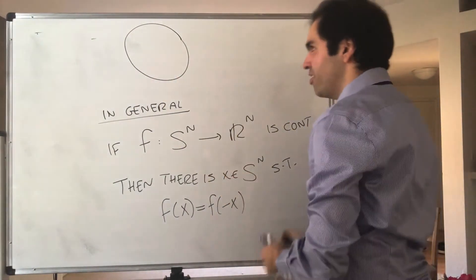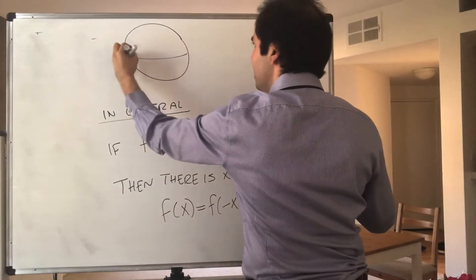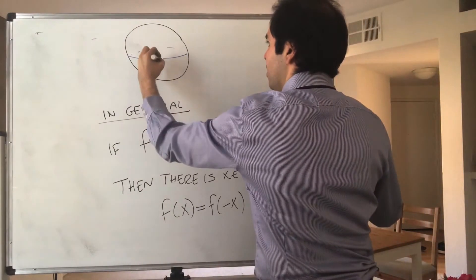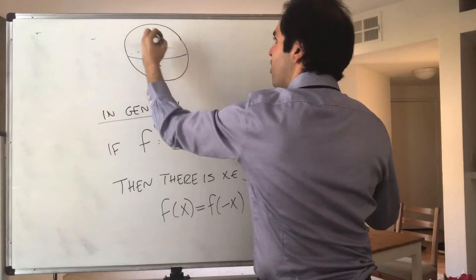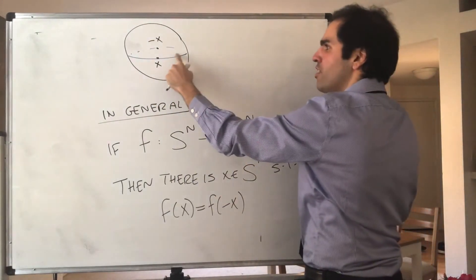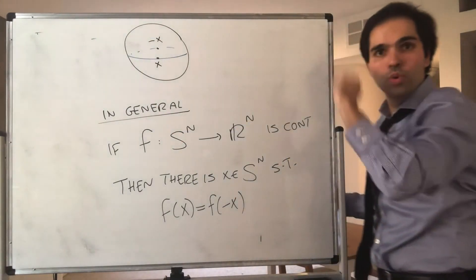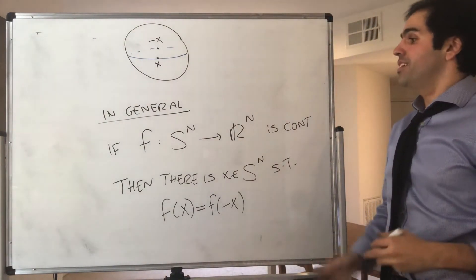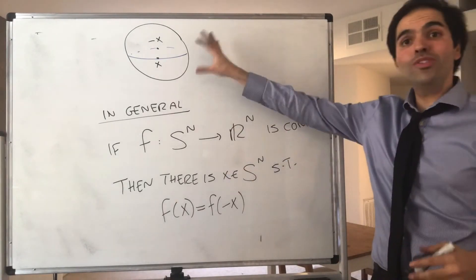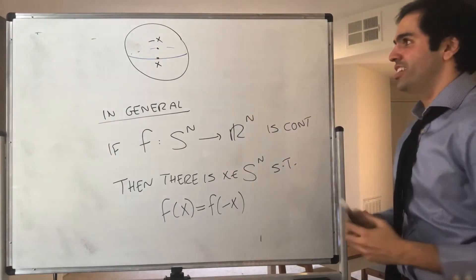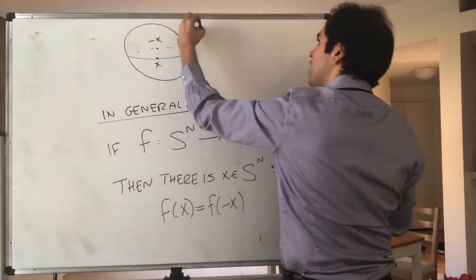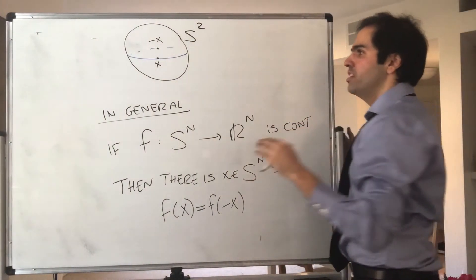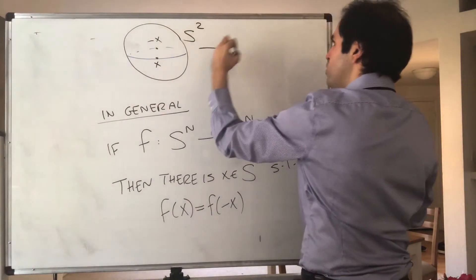And now let me illustrate this again with Earth. Before we had the result for the equator, namely there are two points on the equator that have the same temperature. And that was if we had a single-valued function f from S¹ to all of R. But now, suppose you have a multi-valued function from S², the sphere, a unit sphere, to R².